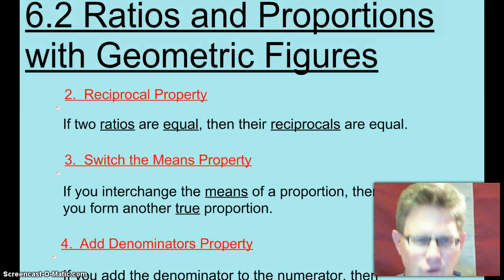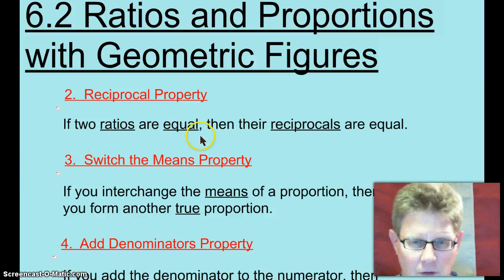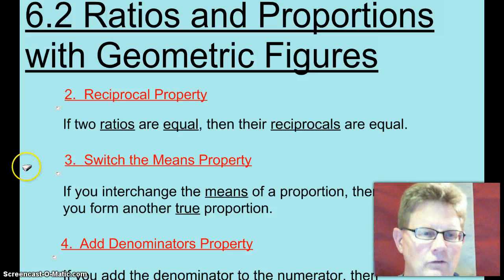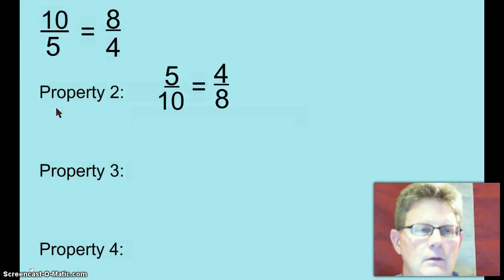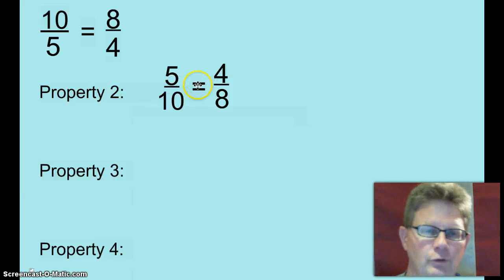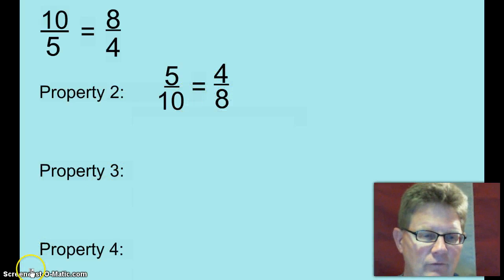The first property is the reciprocal property. If two ratios are equal, then the reciprocals are equal. Ten over five equals eight over four. That's definitely a true proportion. They reduce down to two over one equals two over one. Well the reciprocals are also equal to each other. Five over ten equals four over eight. One half equals one half.